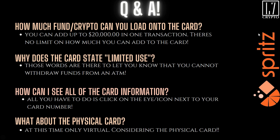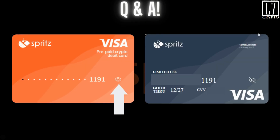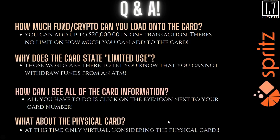Why does the card say 'limited use'? Those words are there to let you know that you cannot withdraw funds from an ATM. That's why they're there. When you flip the card over, it says 'limited use' simply because you can't use it as an ATM card.